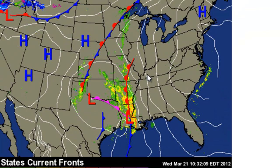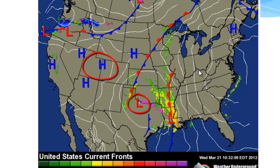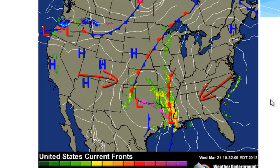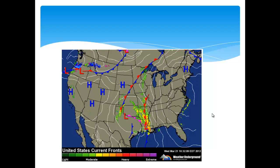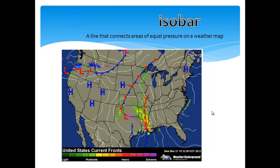You've probably seen a surface map marked with H's and L's, which indicate high and low pressure centers. You may also have noticed that surrounding these highs and lows are lines called isobars. The word isobar breaks down like this: iso means equal, and a bar is a unit of pressure, so an isobar means equal pressure. These areas of equal pressure are connected with a line. The closer the isobars are packed together, the stronger the pressure gradient, which means the wind is going to be stronger in that area.